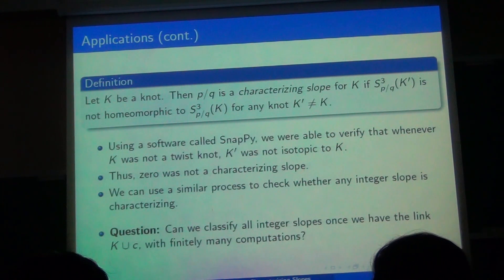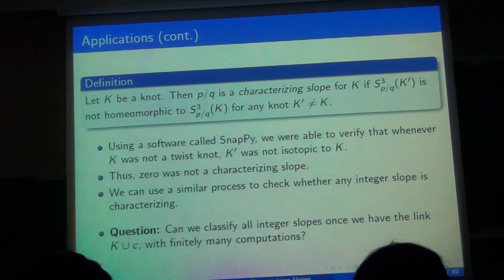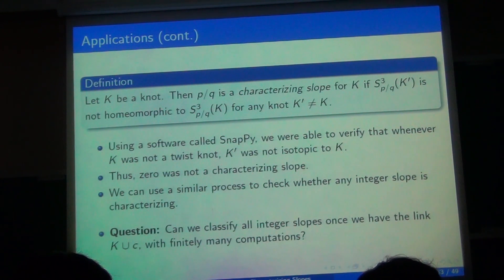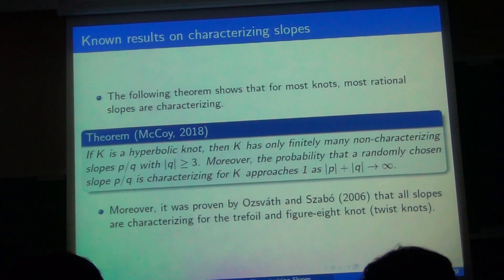And we can use a simpler process to check whether any integer is a characterizing slope. We just have to change the framing at the beginning. So the question that we ask ourselves is, can we check all integer slopes with finitely many computations? Because we could check them one by one, but we can't check all of them.